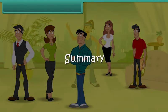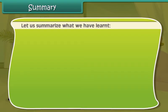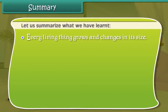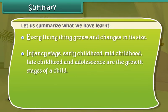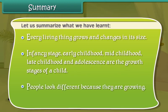Summary. Let us now summarize what we have learned so far. Every living thing grows and changes in its size. Infancy stage, early childhood, mid-childhood, late childhood, and adolescence are the growth stages of a child. People look different because they are growing.